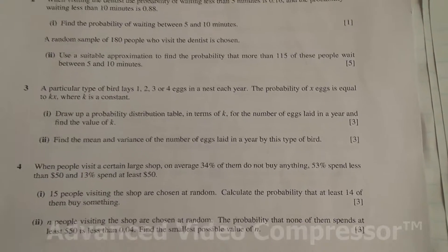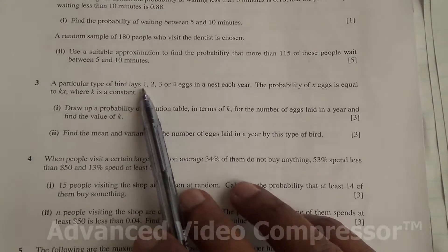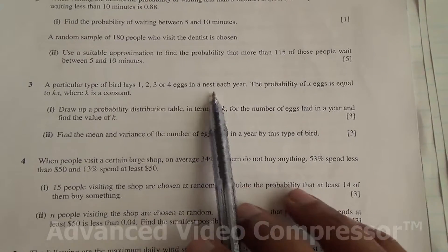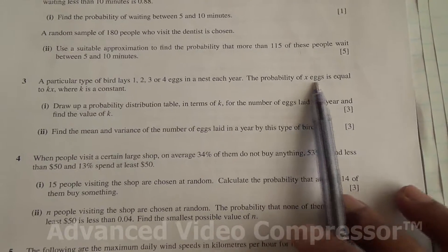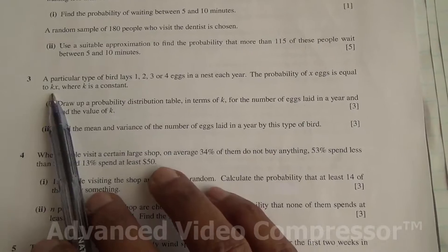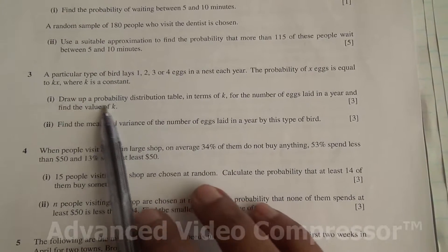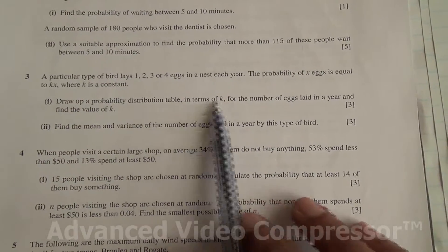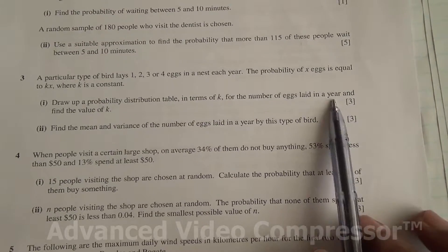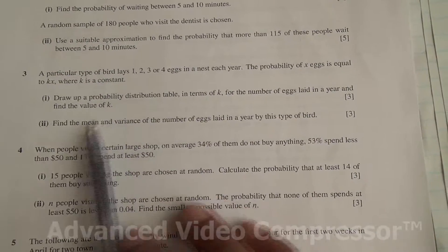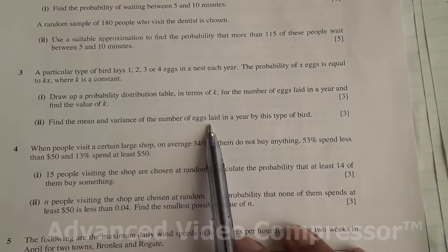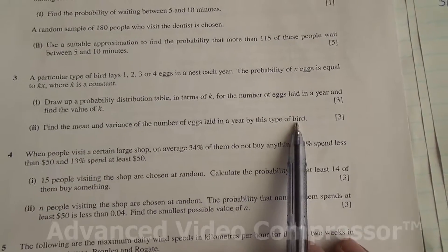A particular type of bird lays 1, 2, 3 or 4 eggs in a nest each year. The probability of X eggs is equal to KX, where K is a constant. Draw up a probability distribution table in terms of K for the number of eggs laid in a year and find the value of K. Also find the mean and variance of the number of eggs laid in a year by this type of bird.